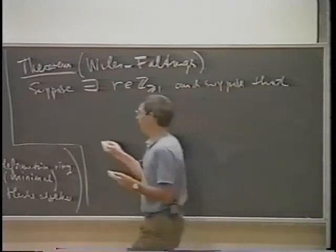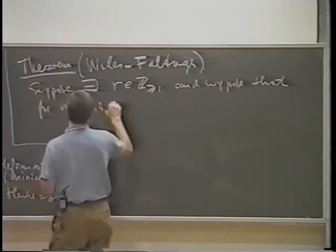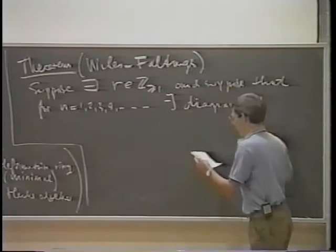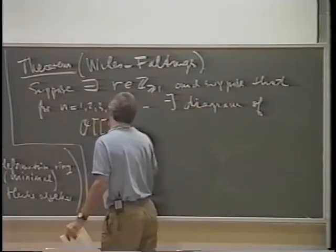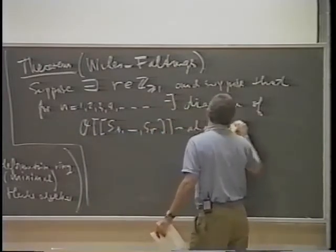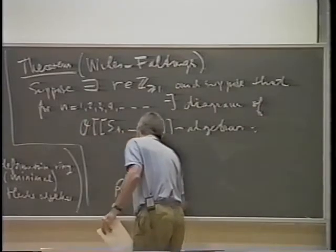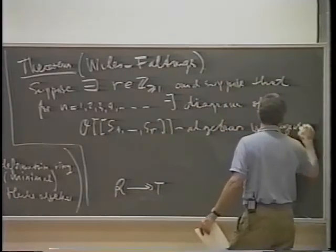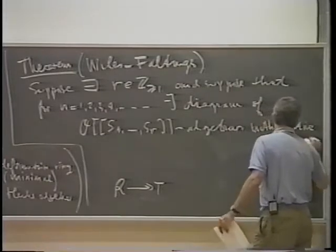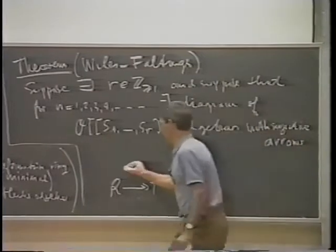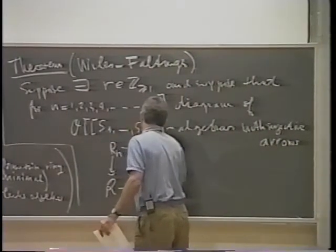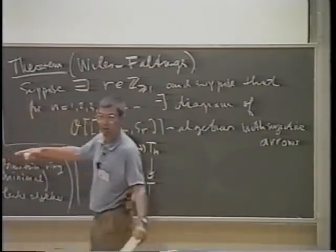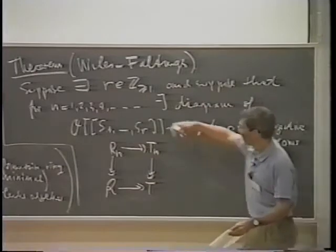And suppose that for all positive integers n, I have a diagram of O, S_1 up to S_R algebras — with surjective arrows — that is, O[S_1,...,S_R]-algebra homomorphisms to be precise. I should tell you in which way I turn these O-algebras R and T into O[S_1,...,S_R]-algebras: you just let S_1 up to S_R act as zero.